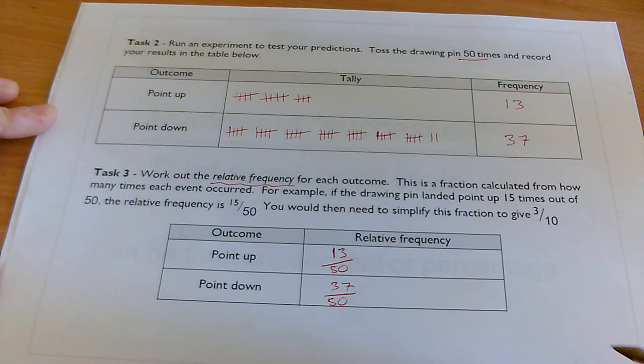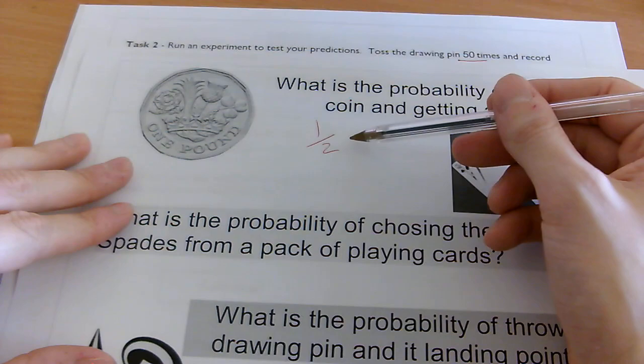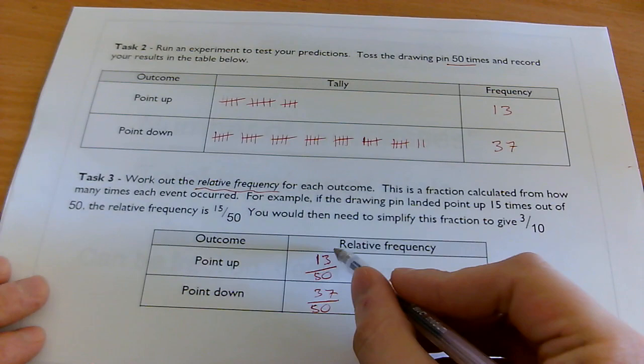Point down, it was 37 again out of 50. So I've now got some probabilities for this specific event. Just in the same way you would have the probability of one out of two for a coin. This time we had to do an experiment to get there, but now we do. And this is called a relative frequency.